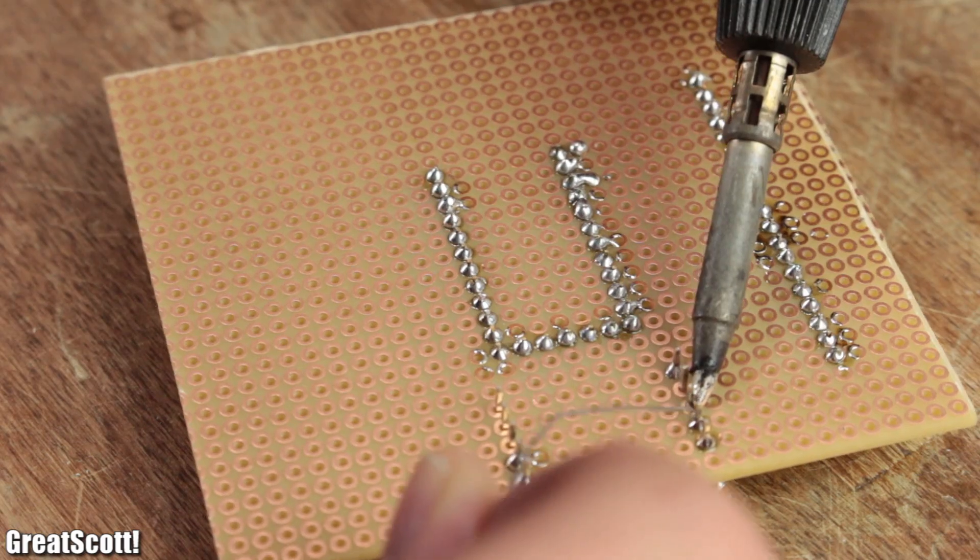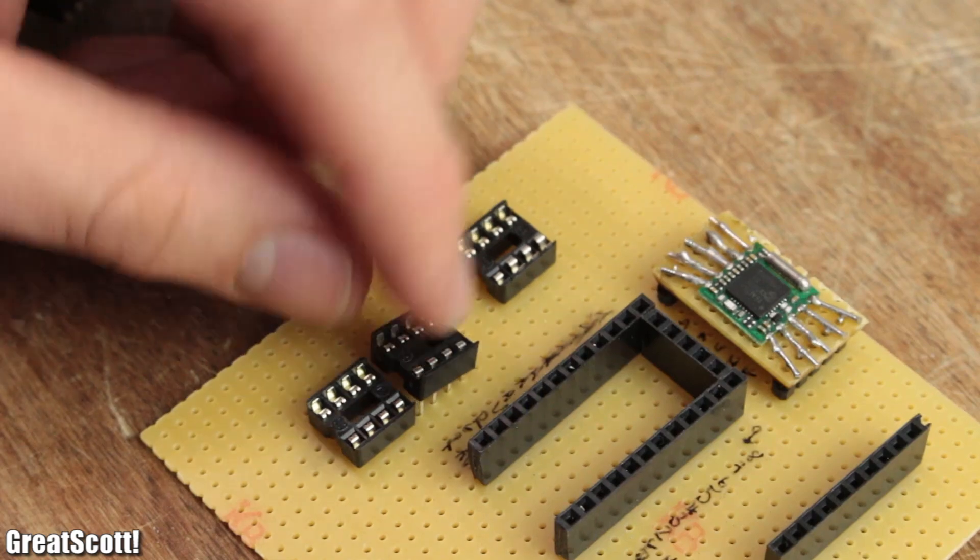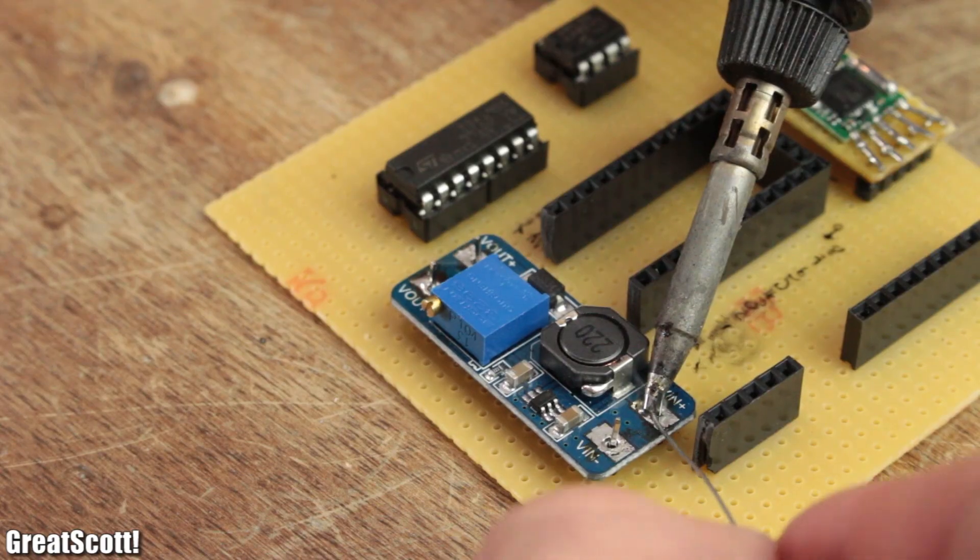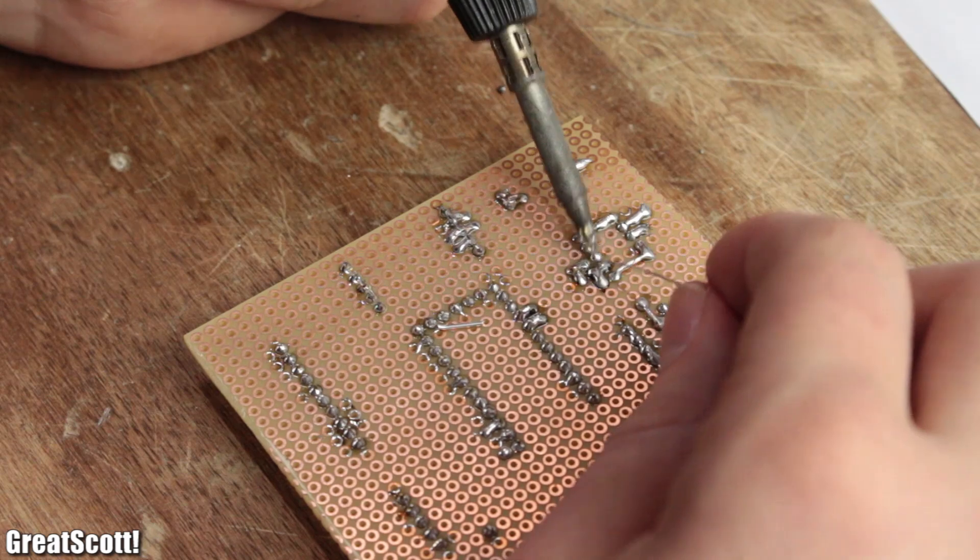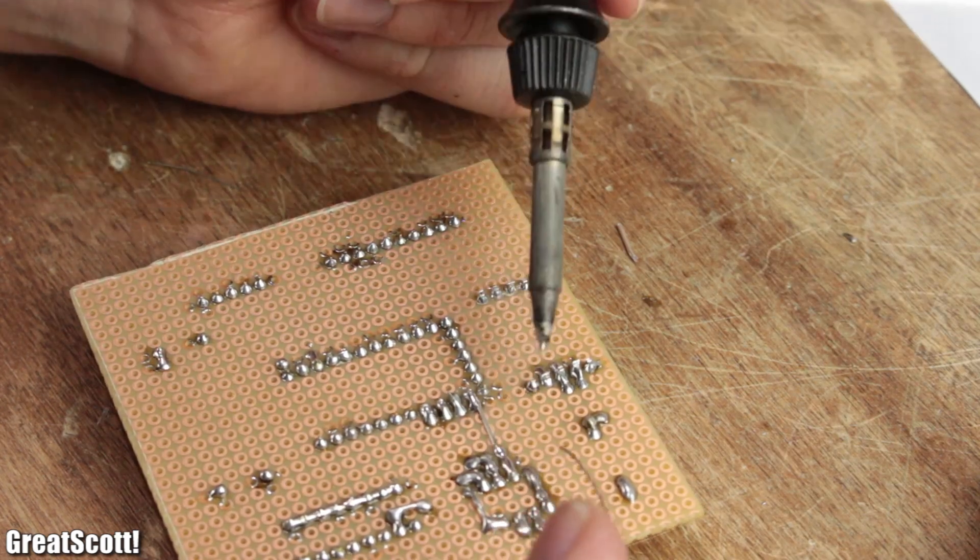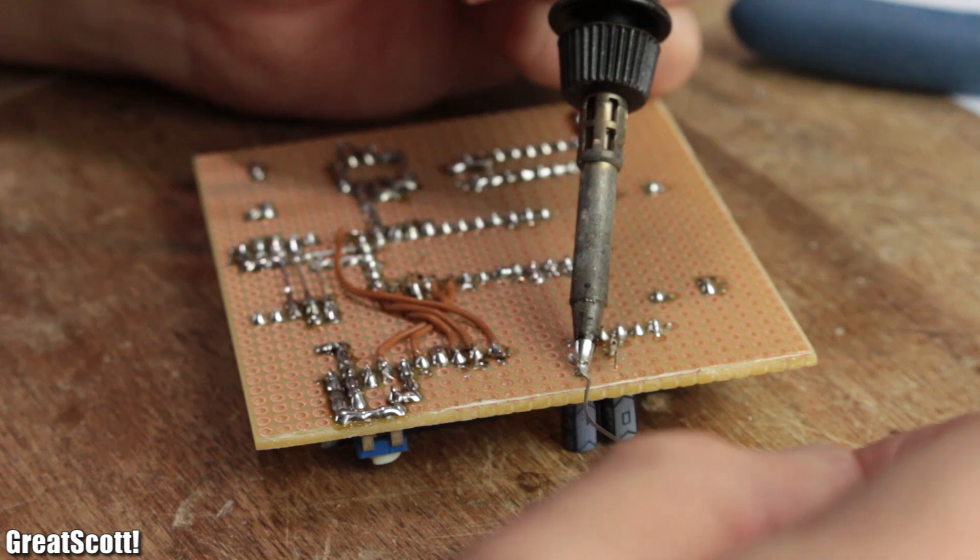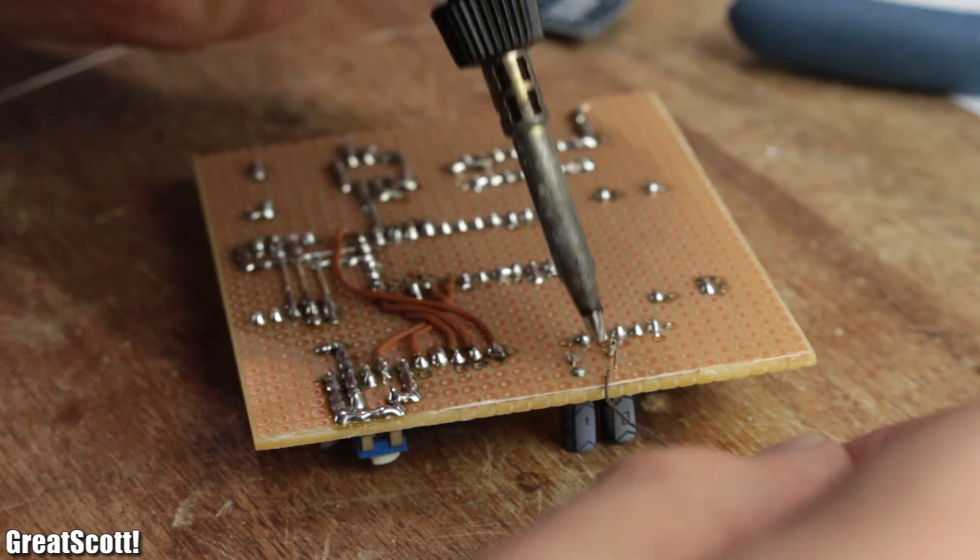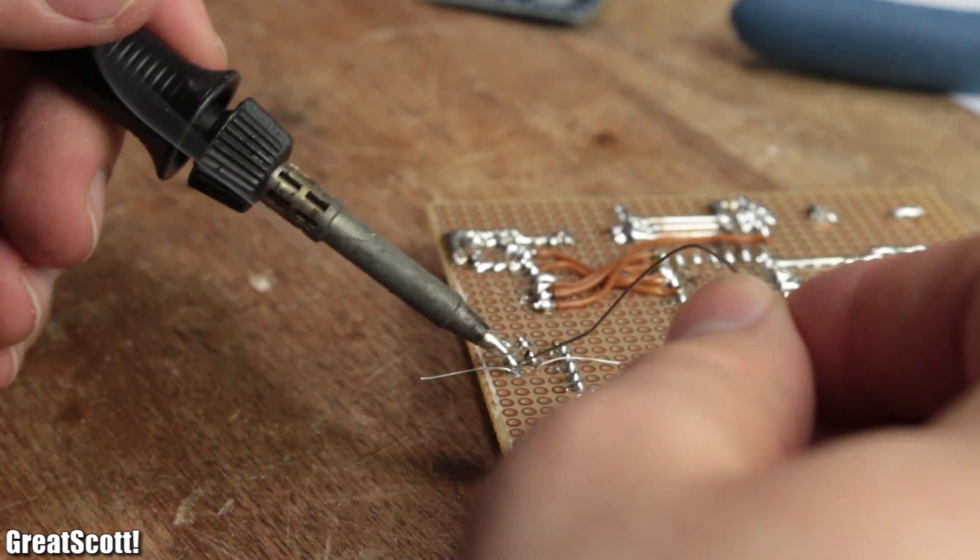Afterwards I soldered in the TEA-5767, the remaining IC sockets and the boost converter. And at this point it was basically an act of connecting all the pins to each other according to the schematic through silver copper wire, or later on through thin flexible wire.